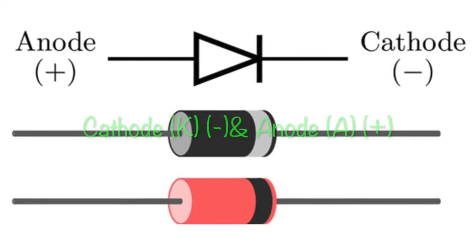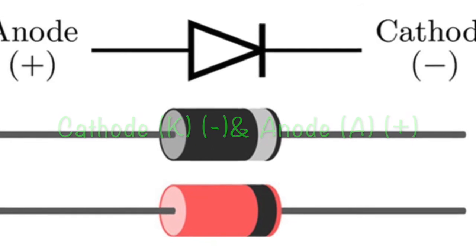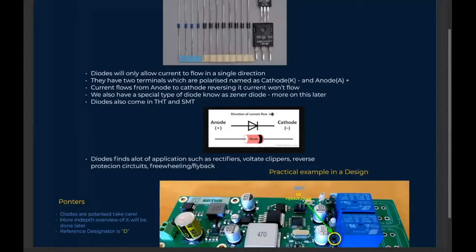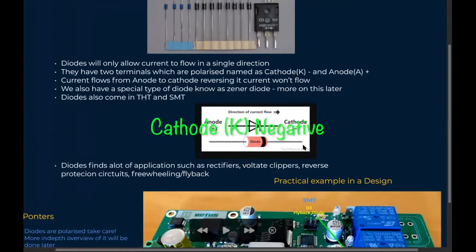They have two terminals which are polarized and are named cathode K and anode positive. So to identify where the cathode is and the anode, you just look at the symbol here. You see this one here standing, it's just like a K here. So where you have like a K and where it's pointing, that's where you have the cathode. This is like a K pointing towards the left direction. So this is where we have the cathode always.